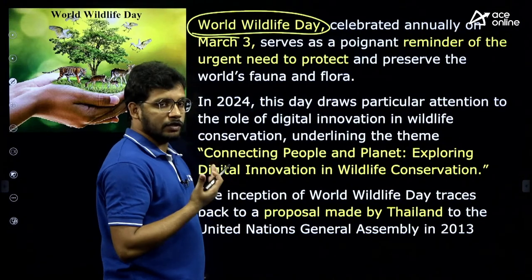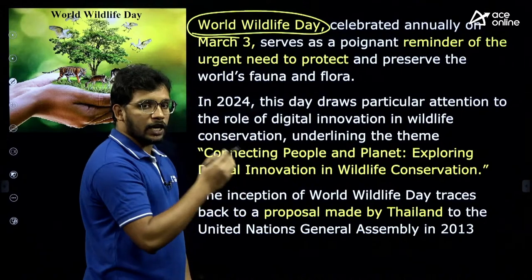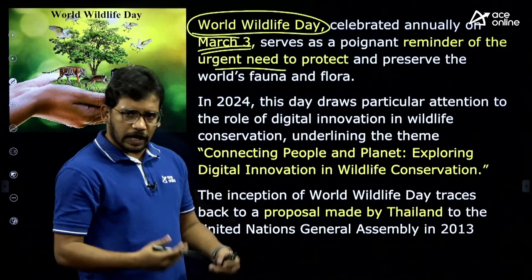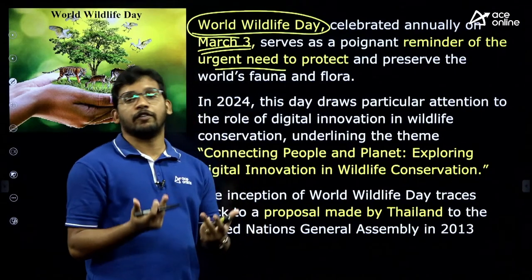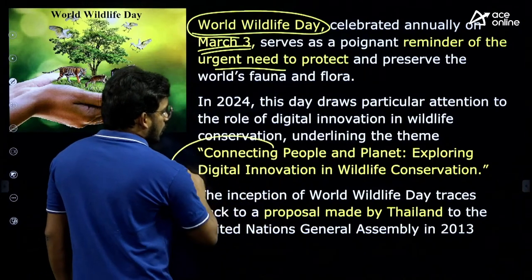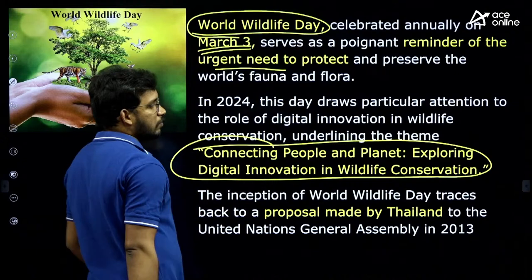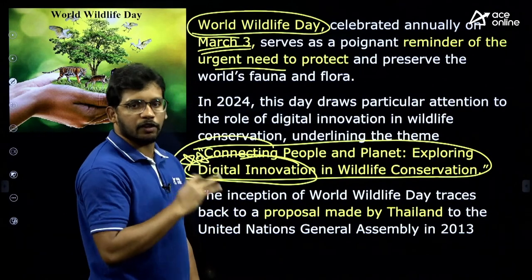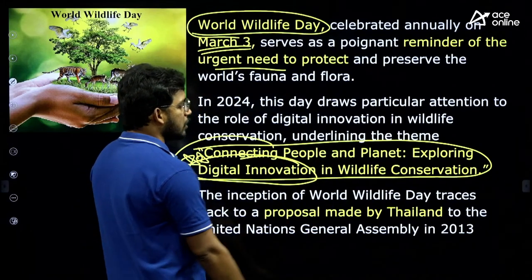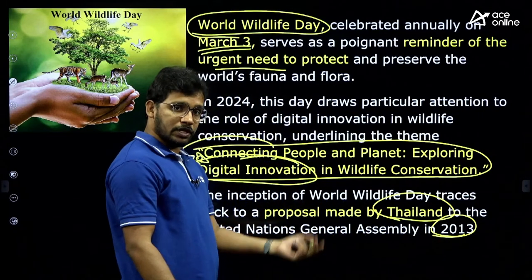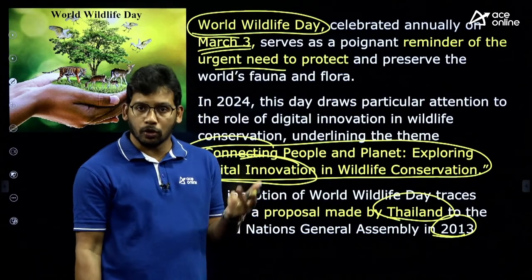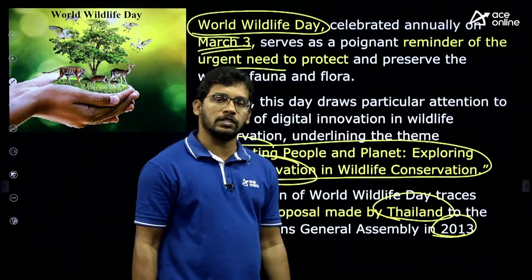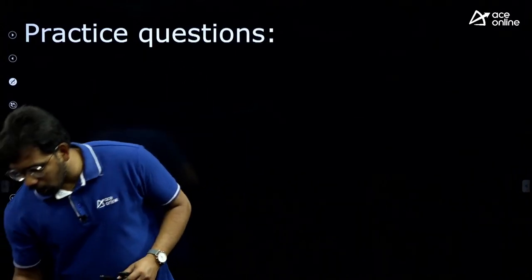Third factual pointer: Today is World Wildlife Day, celebrated on March 3rd. The aim is to protect the environment and create awareness among people. This year's theme is 'Connecting People and Planet: Exploring Digital Innovation in Wildlife Conservation.' It was first proposed by Thailand, accepted, and has been implemented since 2013. The proposing country of major international days is often asked in exams — just as India proposed International Yoga Day.